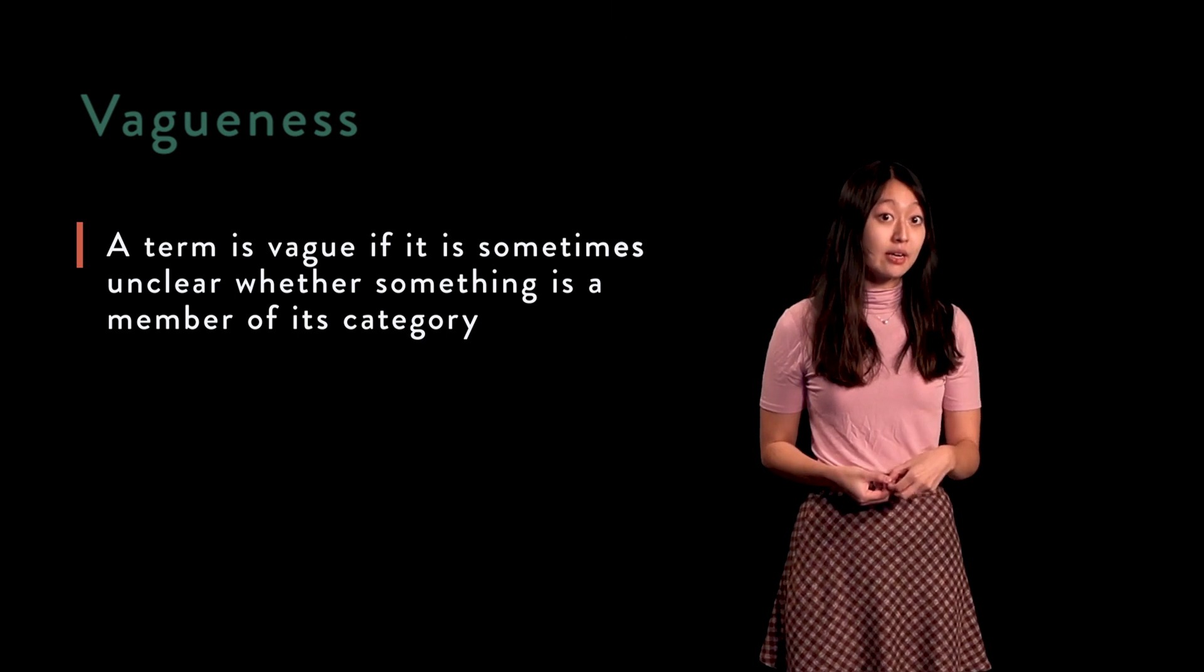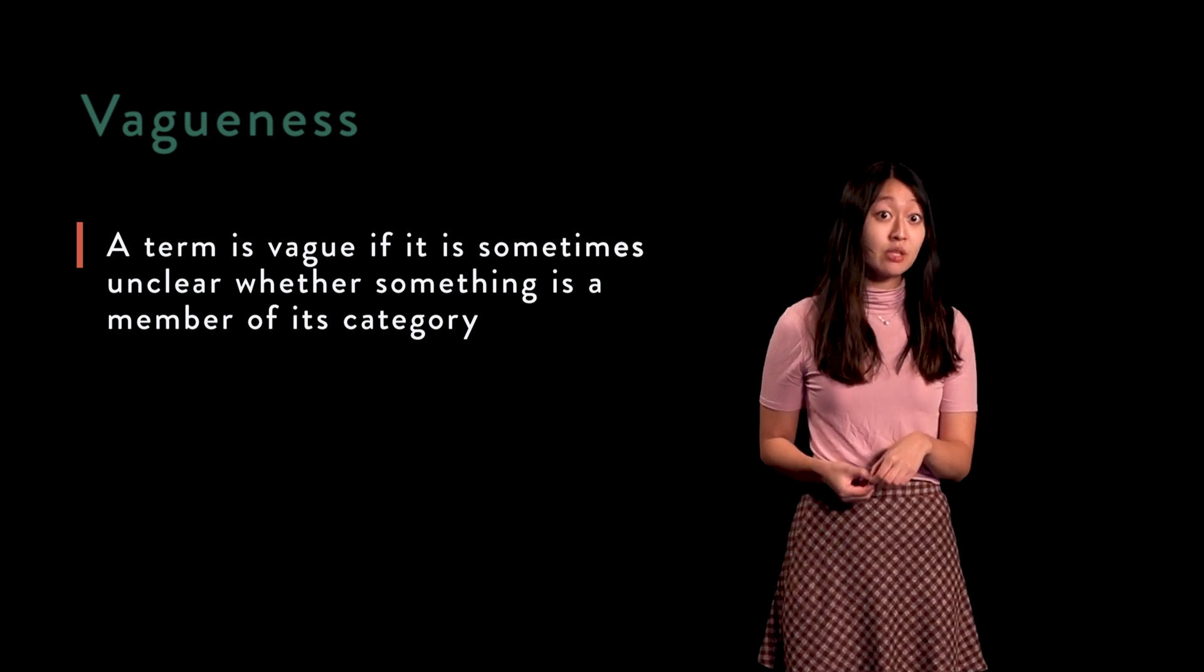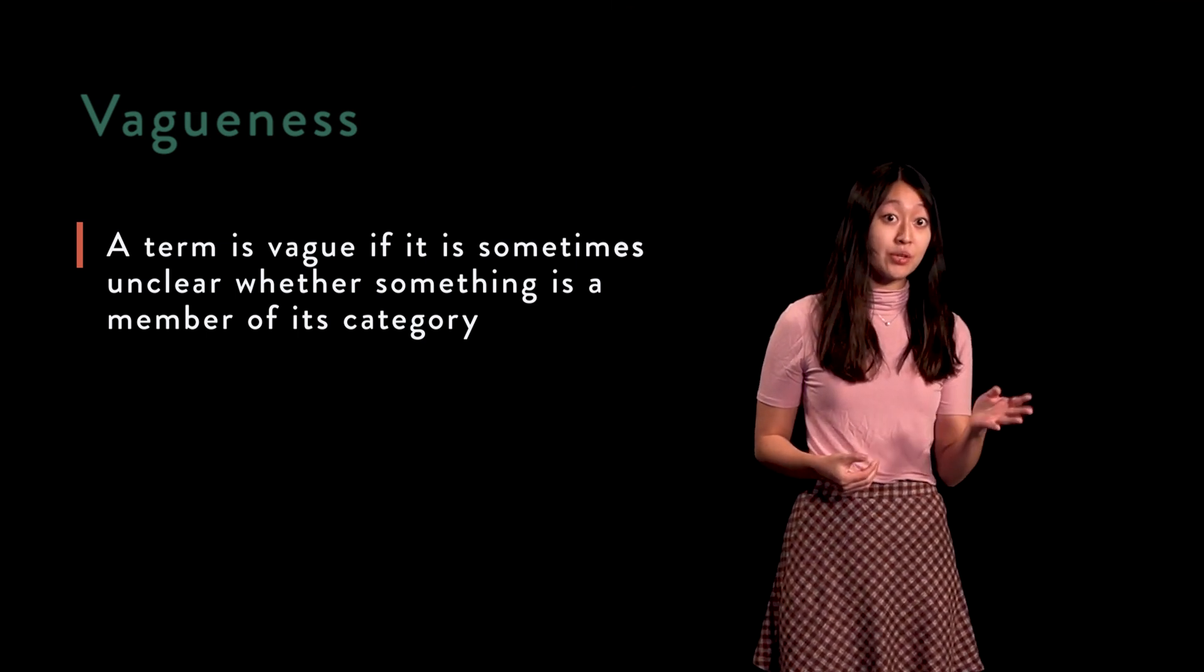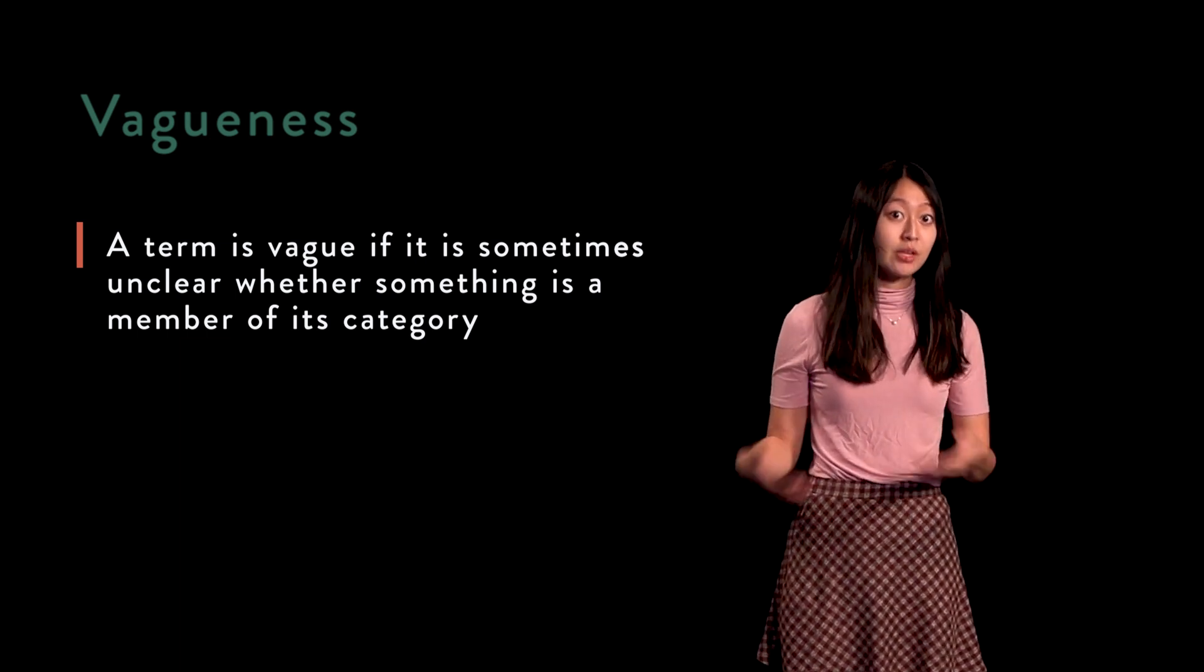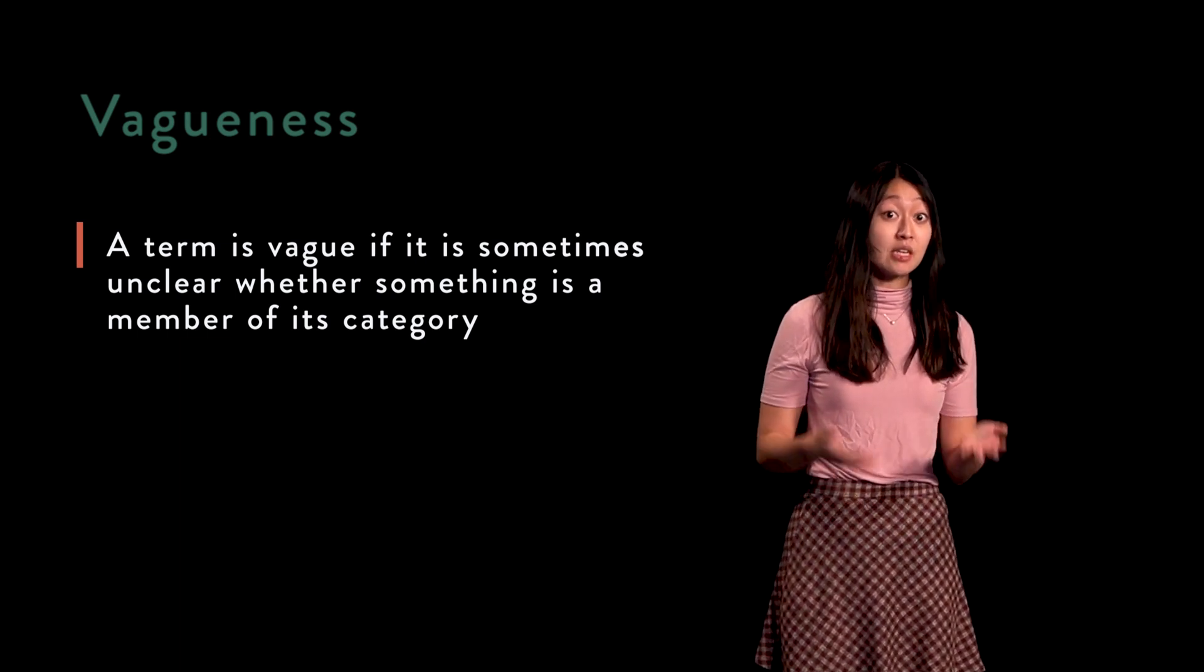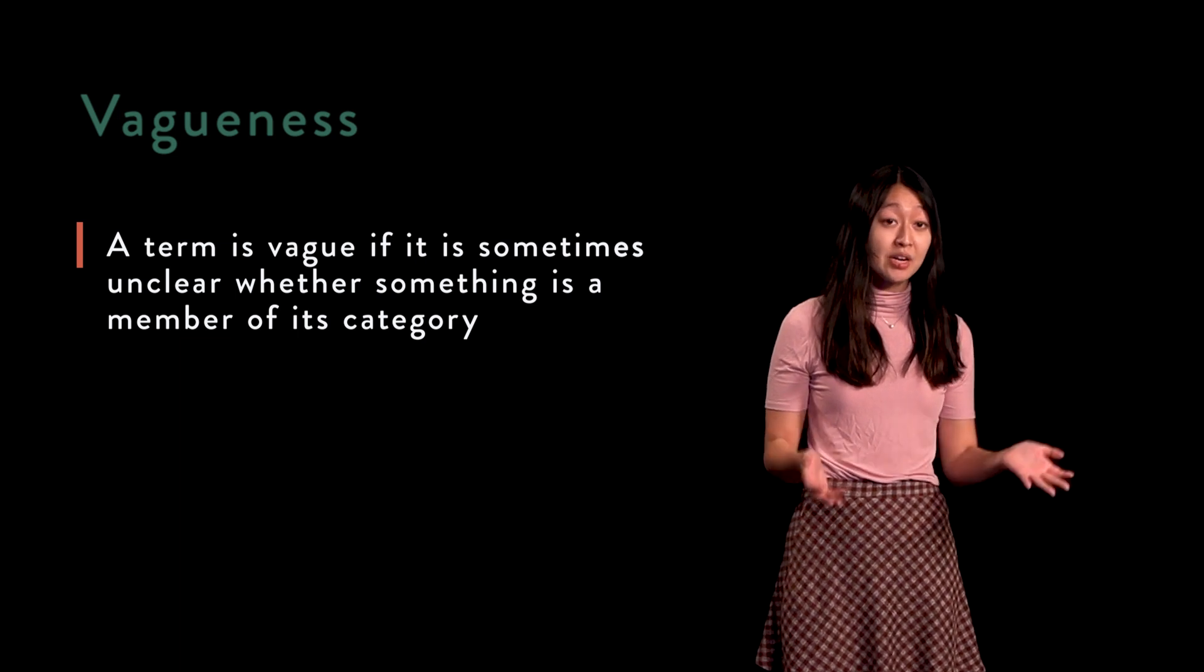A term, usually a predicate, is called vague if it has a particular borderline case where it is not clear whether it can be correctly predicated of a subject or not. In other words, a term is vague if it is unclear which things are members of the category it refers to.